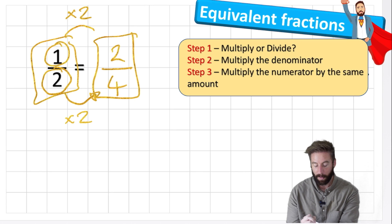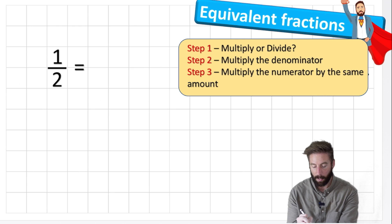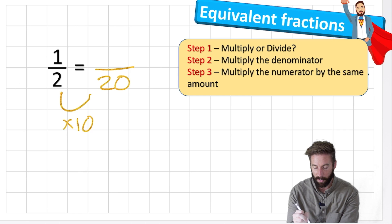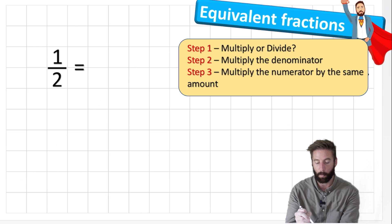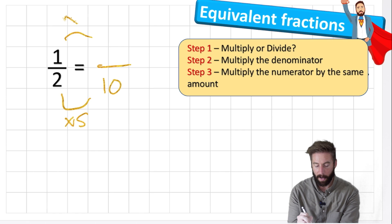Let's do another one - let's times it by ten. Two times ten is twenty, and then whatever I've done to the denominator I need to do to the numerator, so one times ten is ten. Therefore ten twentieths is an equivalent fraction to one half. Let's multiply by five: two times five is ten, one times five is five - five tenths is an equivalent fraction.